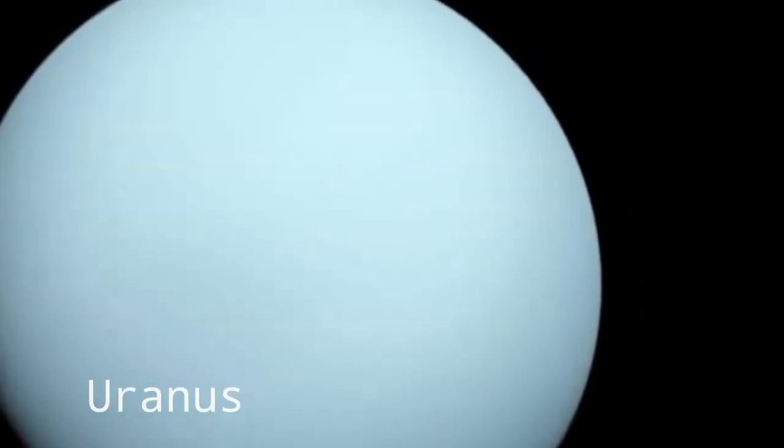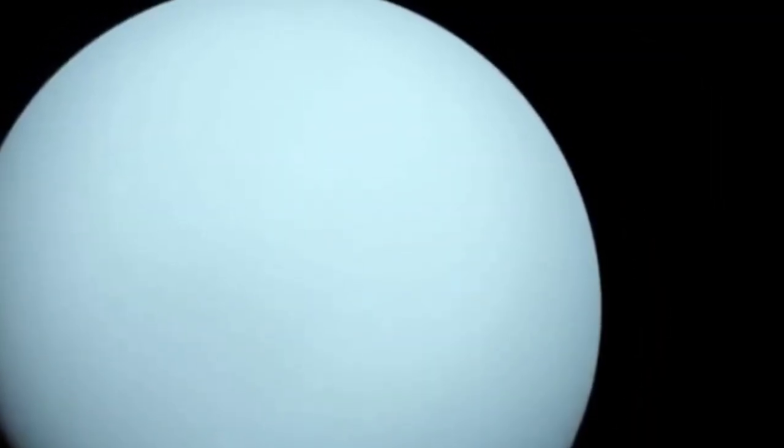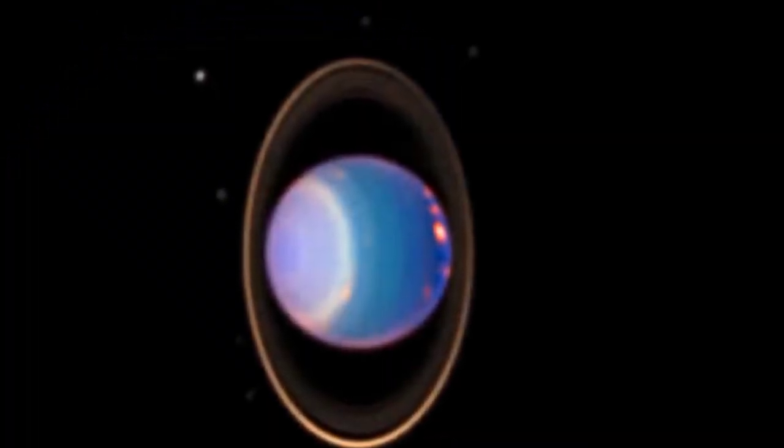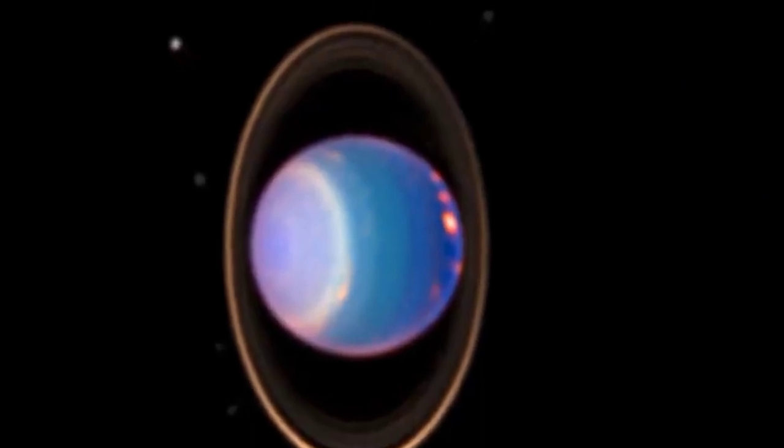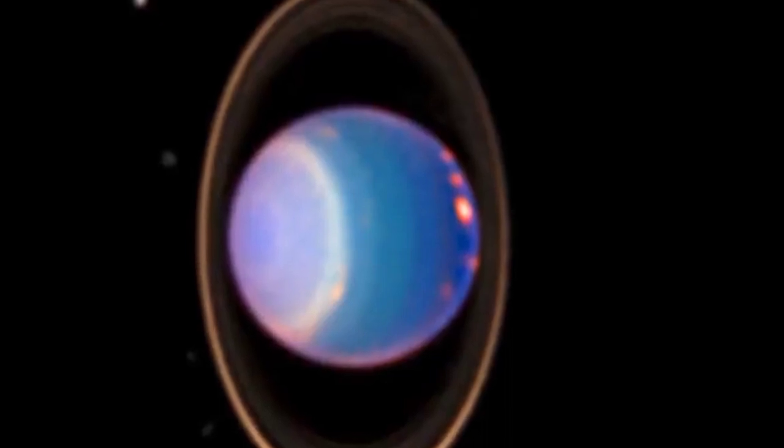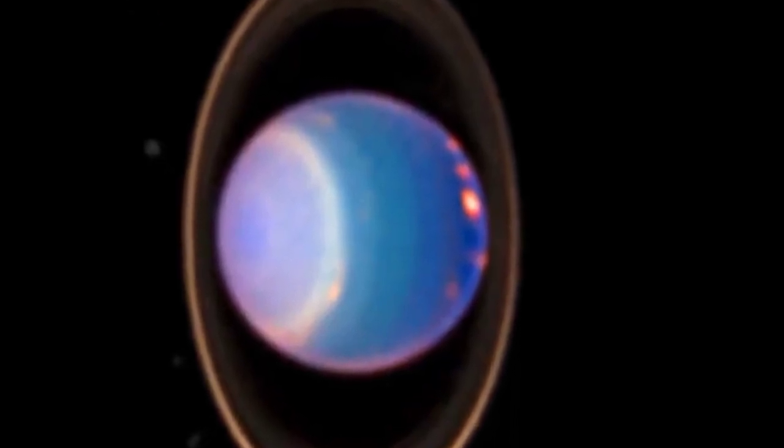After Saturn, Uranus comes. It is called an ice giant, but smaller than Jupiter and Saturn. It is tilted so much that it actually spins sideways revolving around the sun. It also has small rings around.